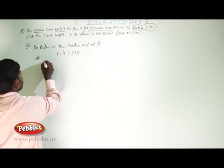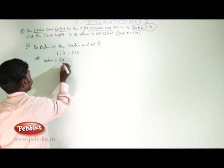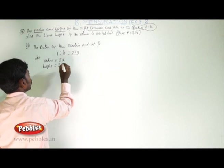Let we take radius equal to 2x and height equal to 3x.